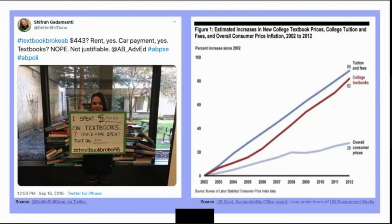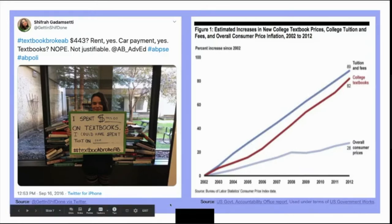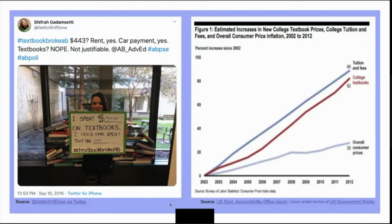On the right hand side of the screen, we can see that the cost of textbooks in addition to tuition has skyrocketed over recent years, much higher than the overall consumer price index more broadly. This particular graph shows the increase from 2002 to 2012 — over a decade — and really demonstrates how textbook costs are increasing at an exponential rate. And this has only continued after 2012.